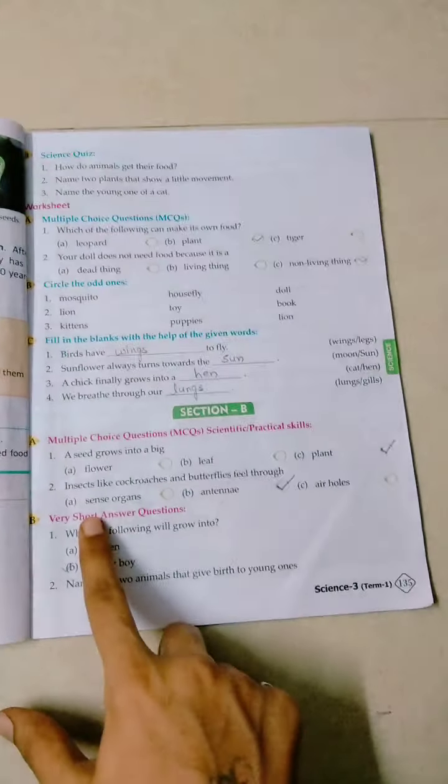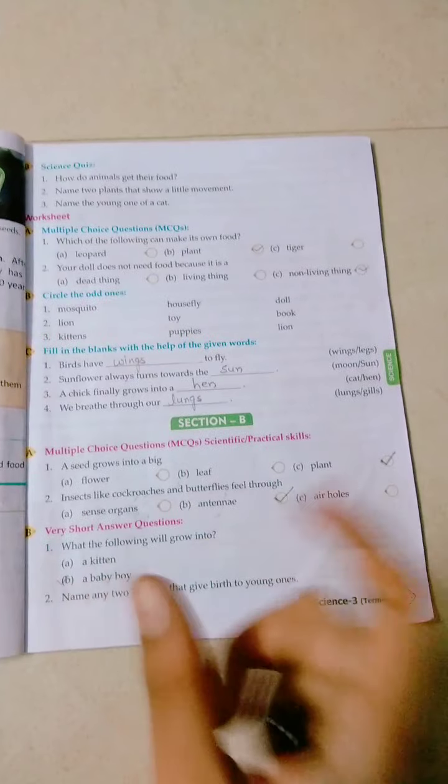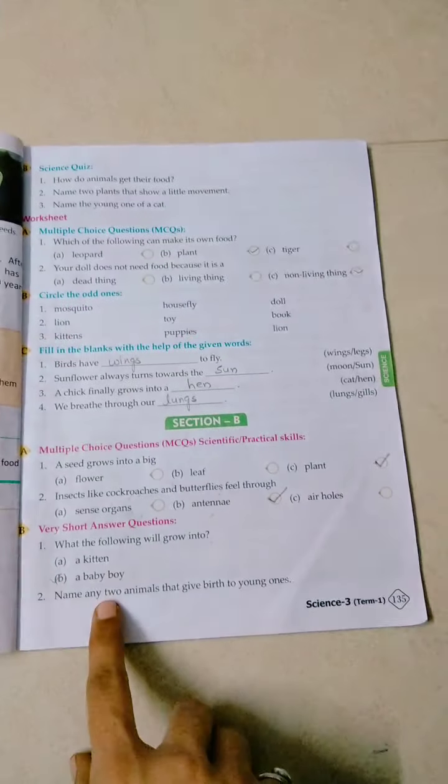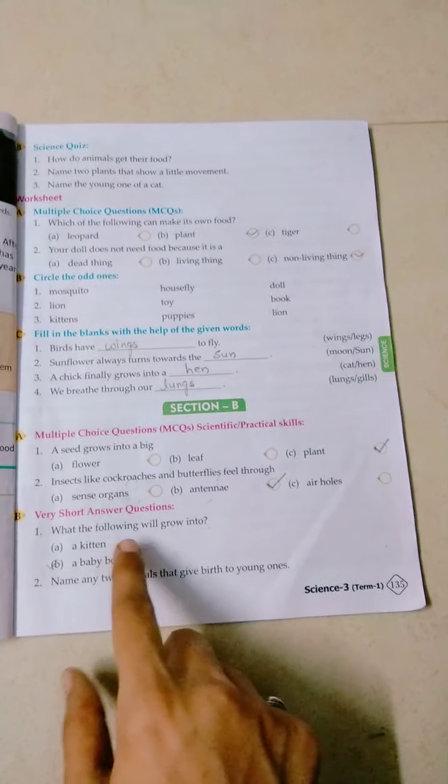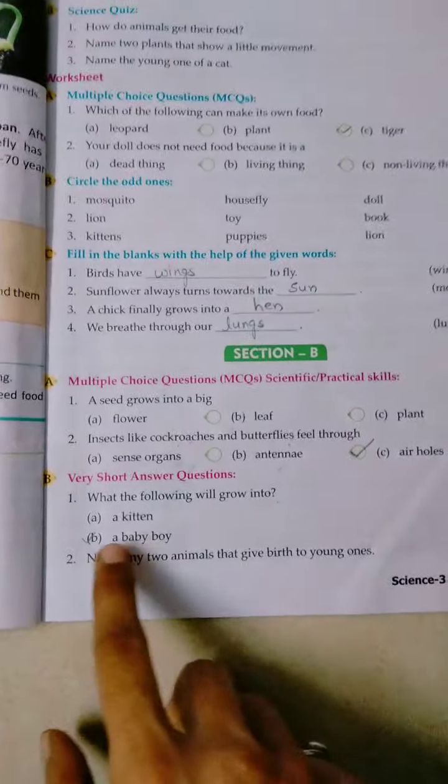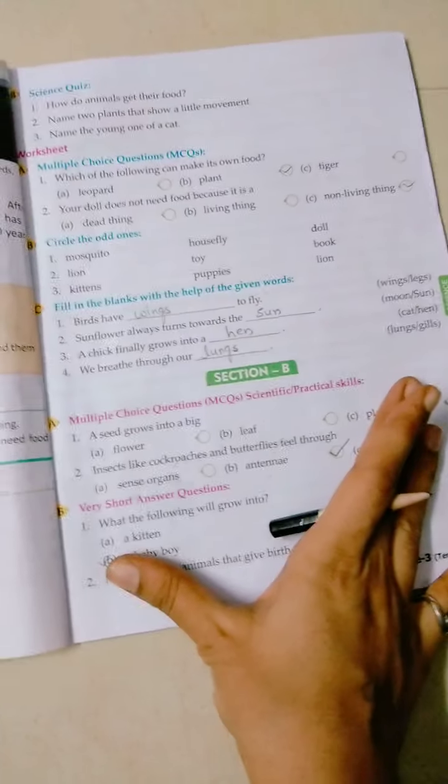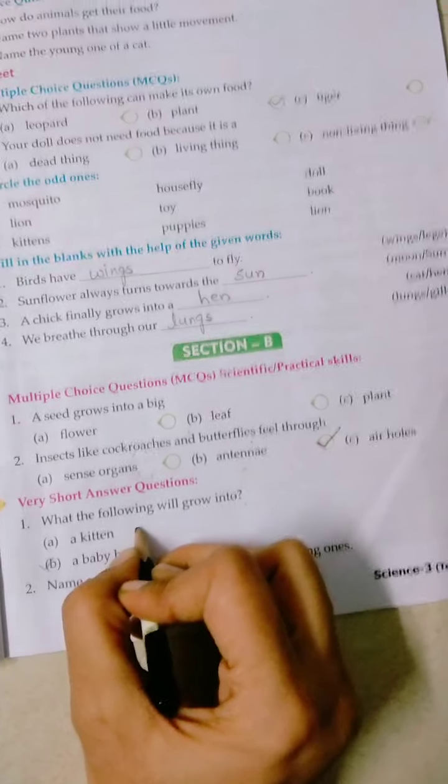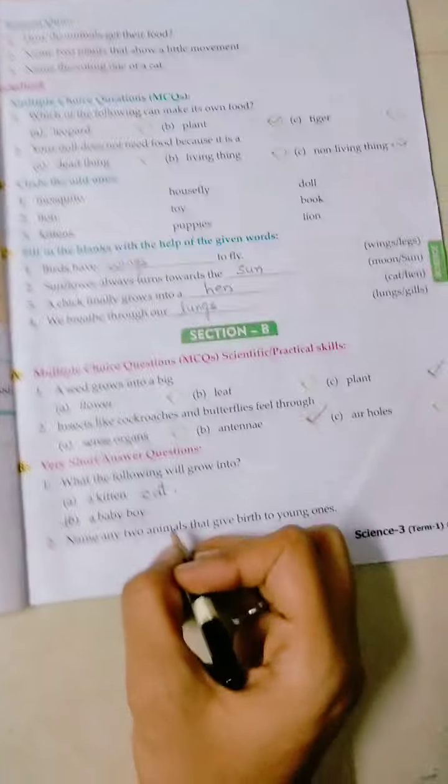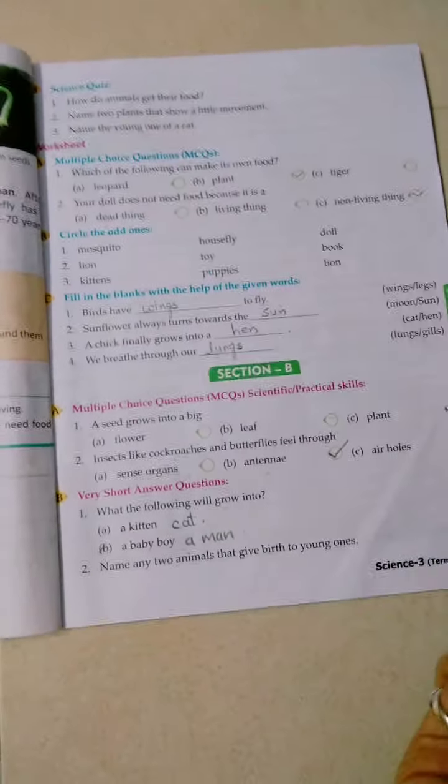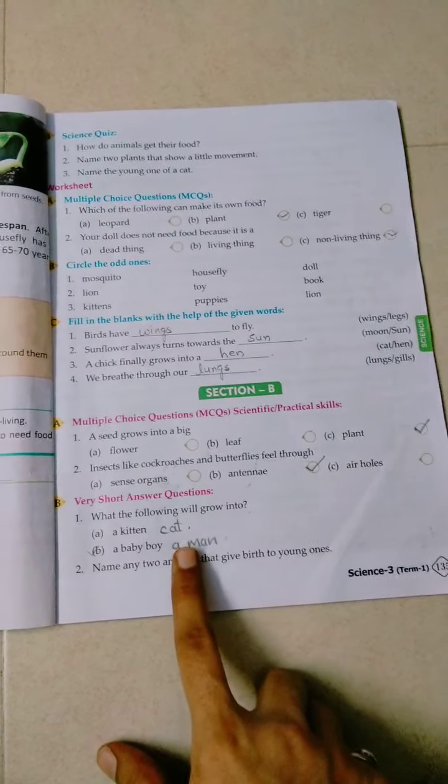Next, very short answer questions. These are very short, meaning the answer should come in one or two words. First question: what will the following grow into? A kitten - kitten will grow into what? Obviously kitten will grow into a cat. Kitten is the baby of cat. So here comes cat. A baby boy will grow into what? Obviously a man. So here comes cat and here comes a man.